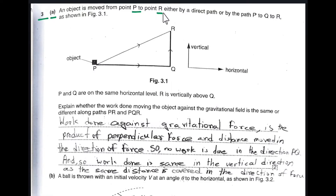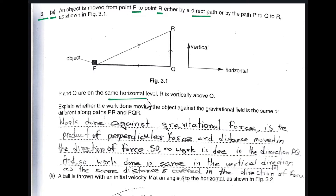An object is moved from P to R either by the direct path from P to R, or by the path P to Q to R. P and Q are on the same horizontal level, and R is vertically above Q. We consider the distance from Q to R as H.